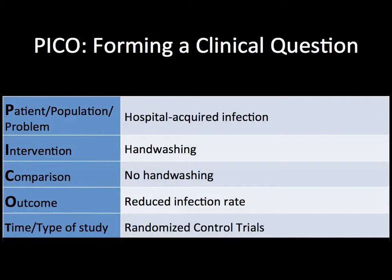Here is our PICO-T. It focuses on the most important elements of our clinical question, and we'll be using the keywords in this PICO-T to build our search strategy and filter our search results. The P is patient population or problem: hospital-acquired infection. I is intervention: handwashing. C is comparison: no handwashing. O is outcome: reduced infection rate. T is type of study: randomized control trials.